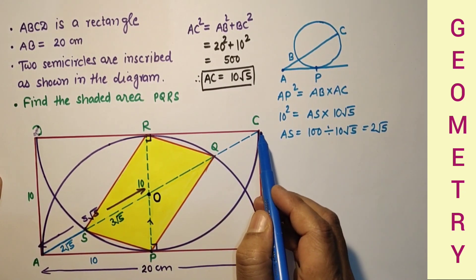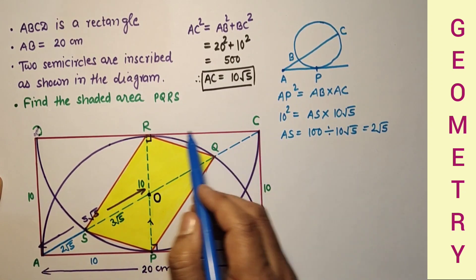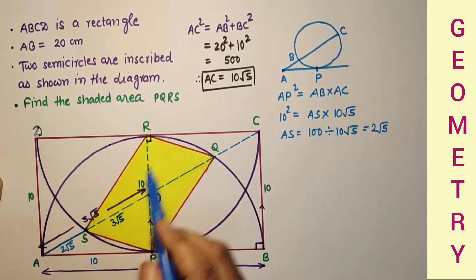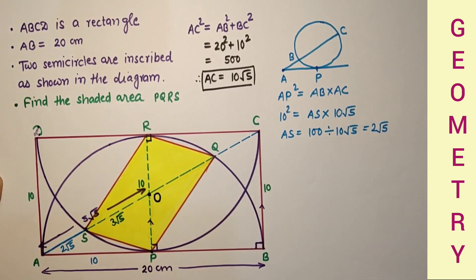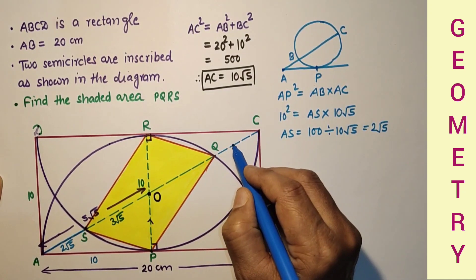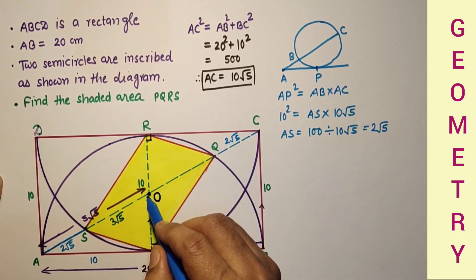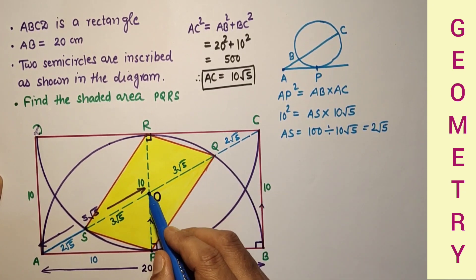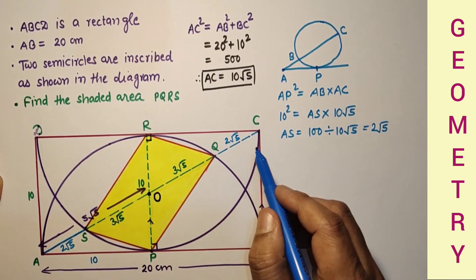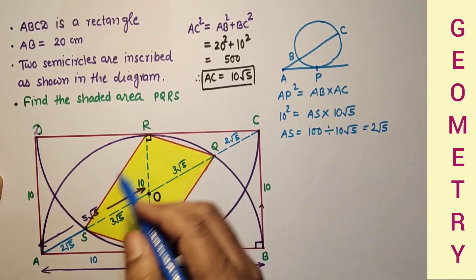Similarly, using CR² equals CQ times CA, and since CR and AP are both equal to 10 and AC is the same, we can say AS equals CQ, which is also 2√5, and QO is also 3√5. We can say that O is the midpoint of SQ and also the midpoint of RP, so this quadrilateral PQRS is a parallelogram.